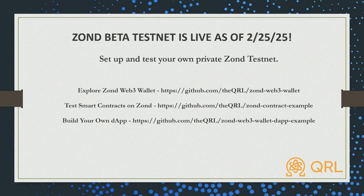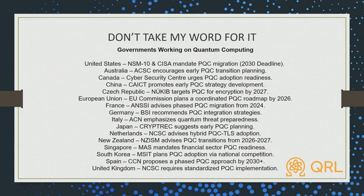We announced our beta testnet live as of yesterday — day one information. You'll be able to set up and test your own private node. Do not take my word for it — governments are working on this problem as well. This is a short list but gives you an idea as to how many governments are working on this. The United States just moved their target deadline from 2035 to 2030 in order to upgrade all of their systems to post-quantum security.